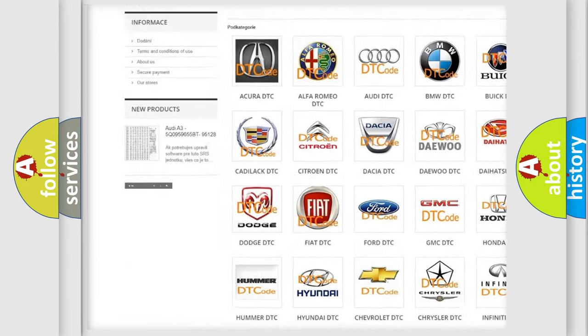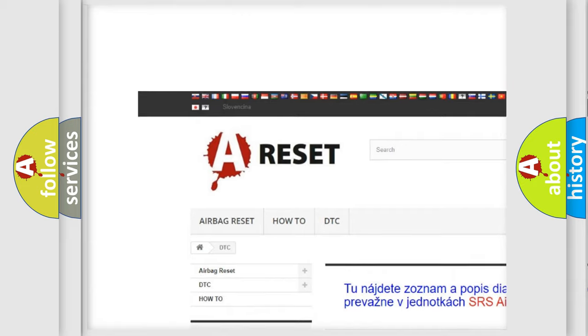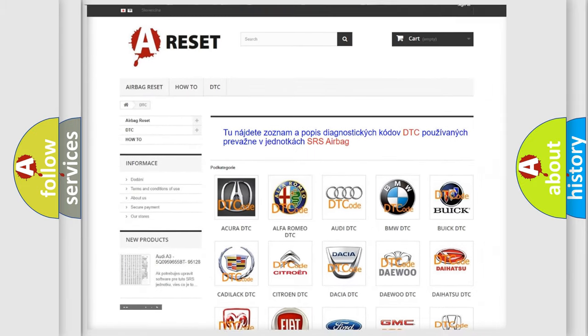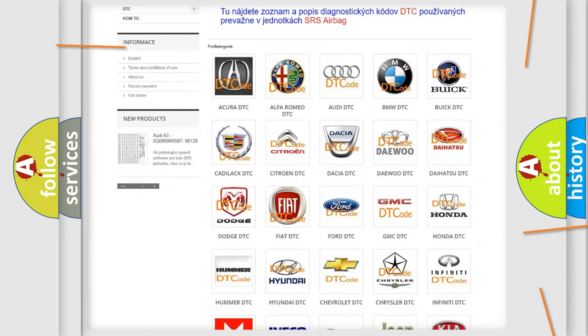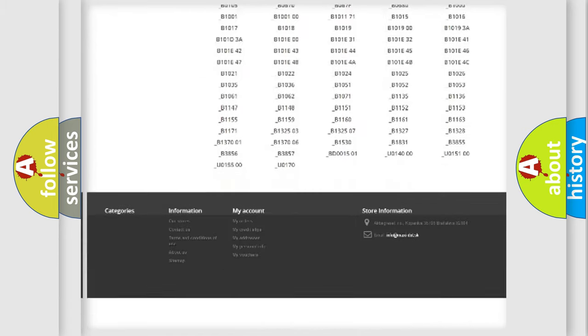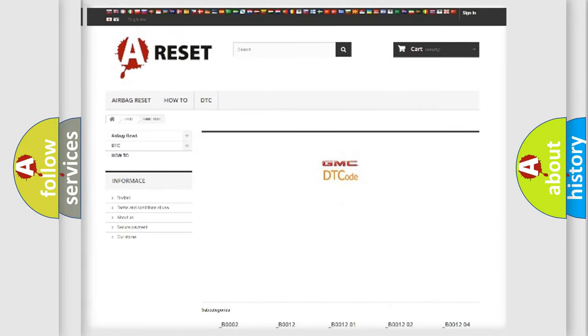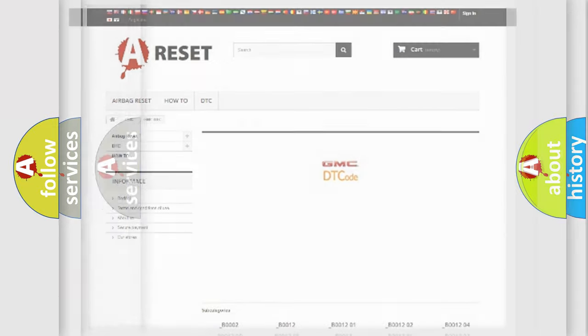Our website airbagreset.sk produces useful videos for you. You do not have to go through the OBD2 protocol anymore to know how to troubleshoot any car breakdown. You will find all the diagnostic codes that can be diagnosed in GMC vehicles, and also many other useful things.